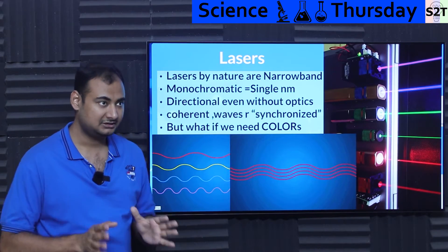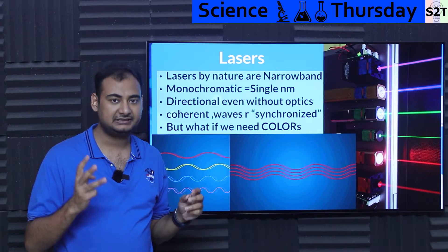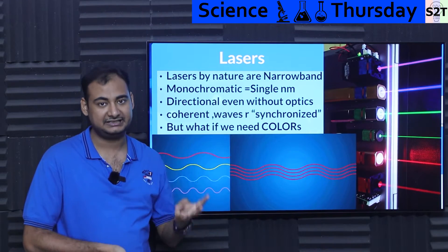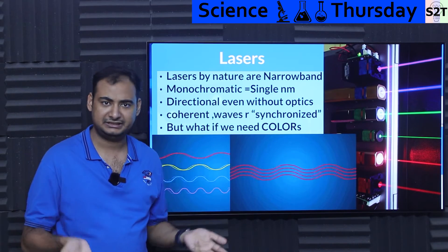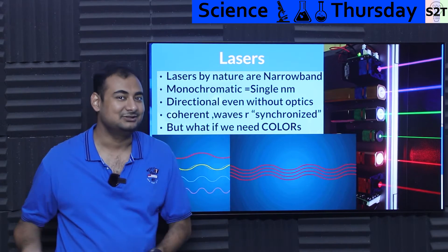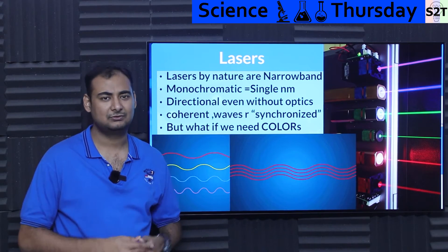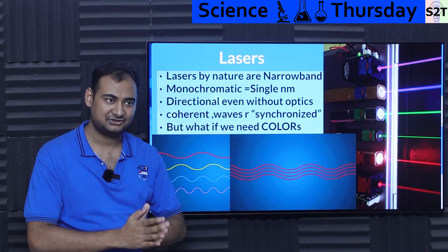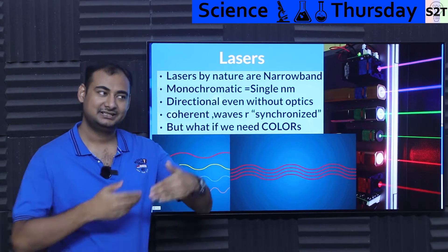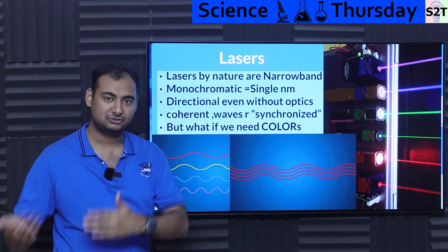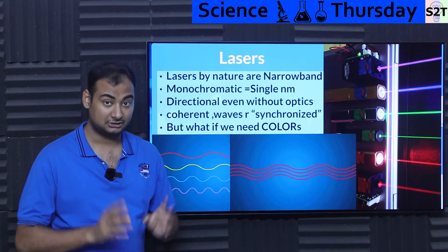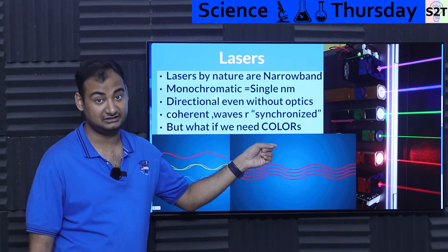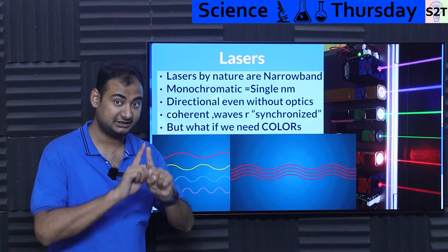But what if you need color? Not just taking three colors and mixing them and claiming it to be white — like that's how laser IMAX projectors work, with three diodes: red, blue, and green. The digital file only has three channels, and if your camera sensor is only capturing three channels, to recreate it you only need three channels. But if you need true color, meaning if you shine it on something and it actually looks like a continuous spectrum, you need wide band.